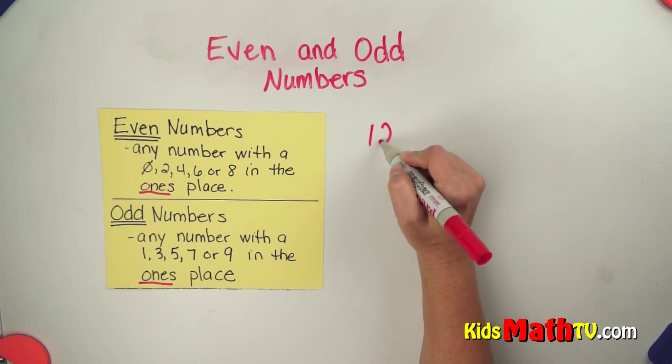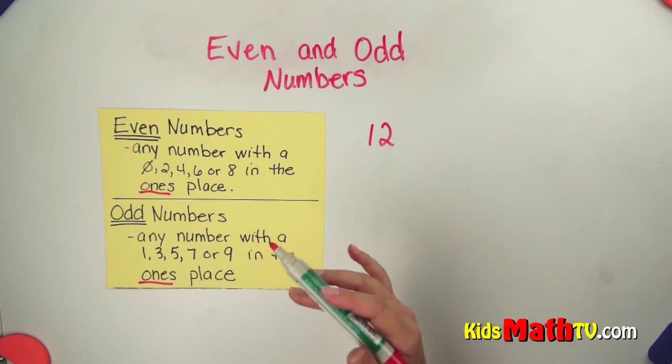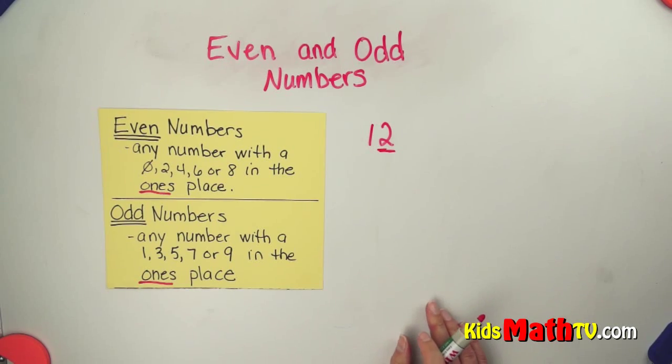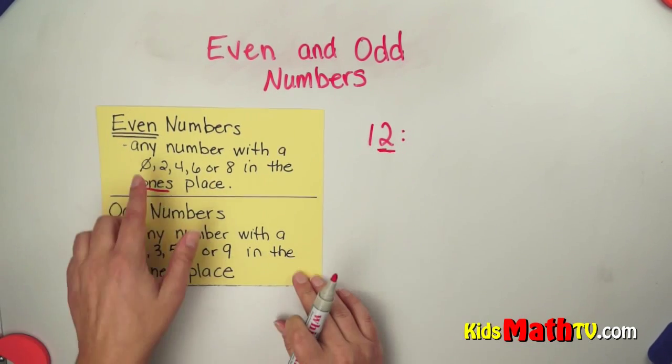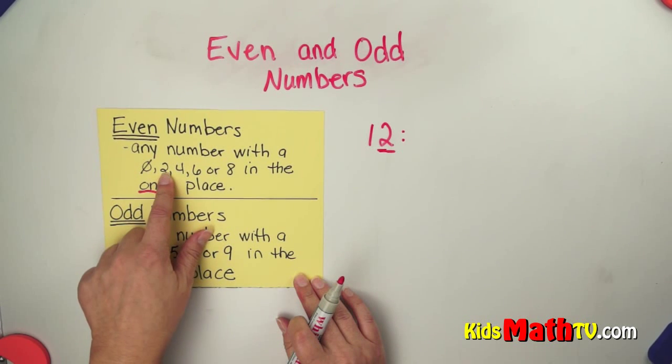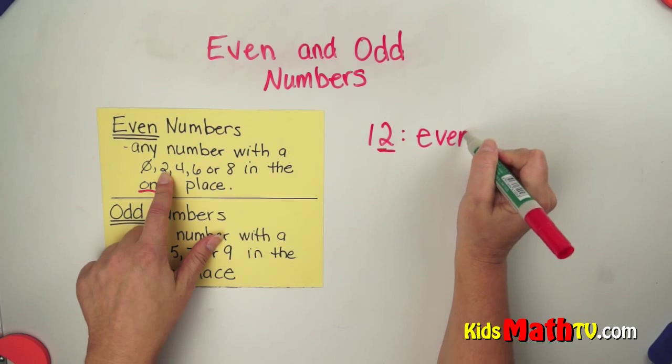So for example, if you have the number 12, the 1 is in the tens place. We are not worried about that. We are simply looking at the 2 in the ones place. This is a 2. So I look at my list. It is on the even number list, so this is an even number.